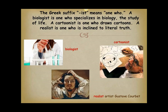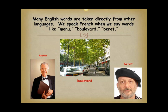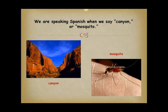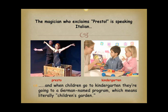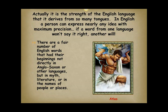Many English words are taken directly from other languages. We speak French when we say words like menu, boulevard, beret. We are speaking Spanish when we say canyon or mosquito. The magician who exclaims presto is speaking Italian. And when children go to kindergarten, they're going to a German-named program which means literally children's garden. Actually, it is the strength of the English language that it derives from so many tongues. In English, a person can express nearly any idea with maximum precision — if a word from one language won't say it right, another will.